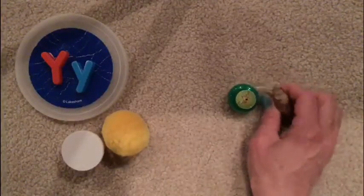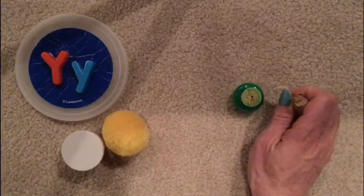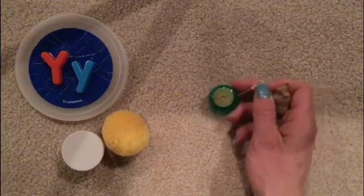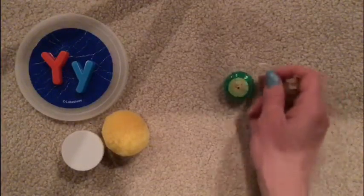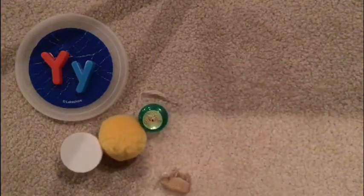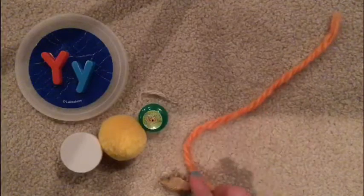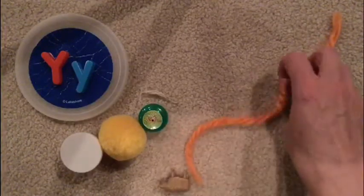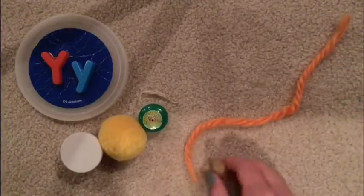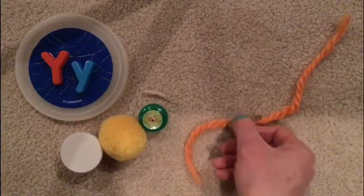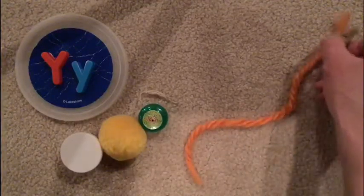So you could use a yo-yo today or if you don't have one, you could try making one and you could go outside and play with the yo-yo. We also had a piece of yarn. He's going to lay that piece of yarn out and he's going to use it like a balance beam. And he's going to walk on that piece of yarn all the way down to the end.